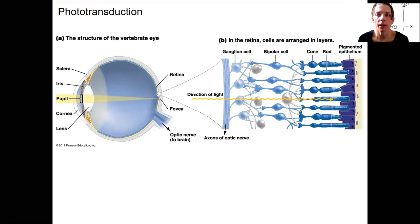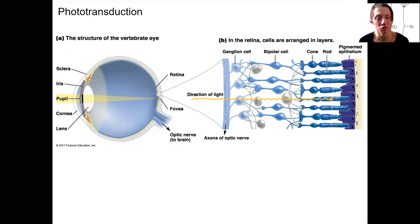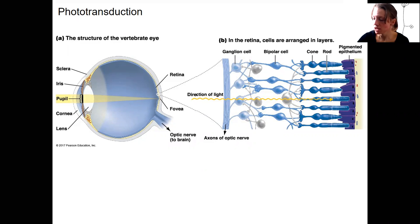So it's what we've all been waiting for: phototransduction. How does a photon of light become a neural signal? It has to be translated, transducted by photoreceptors.